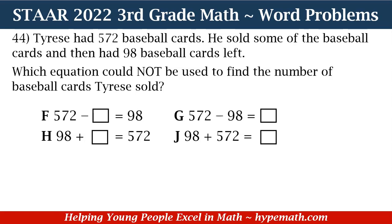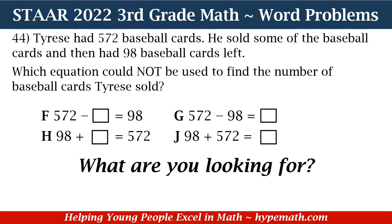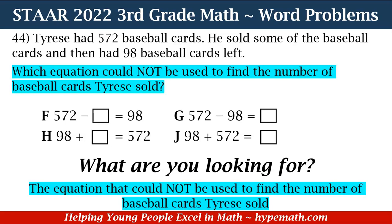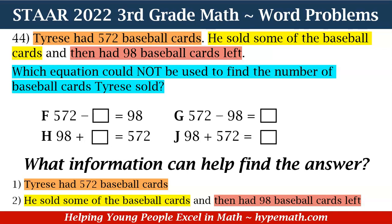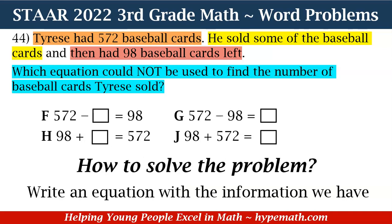In order to solve this problem, the first thing we need to do is ask ourselves: what are we looking for? We are looking for the equation that could NOT be used to find the number of baseball cards Tyrese sold. Now that we know what we're looking for, our next question is: what information can help us find the answer? The information is: one, Tyrese had 572 baseball cards; two, he sold some and then had 98 baseball cards left.